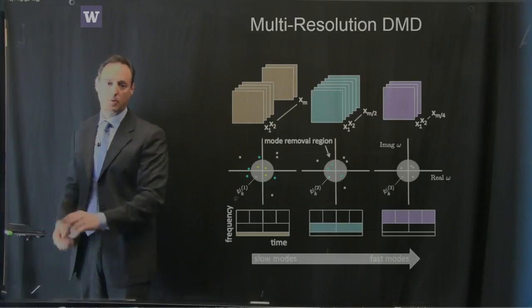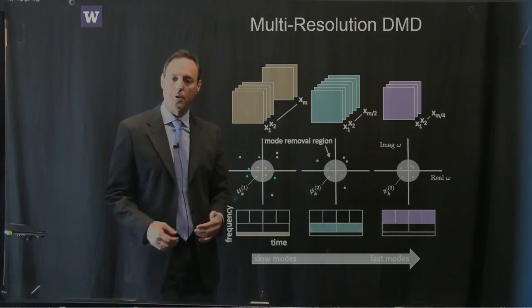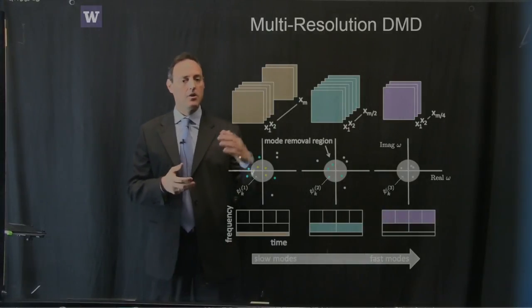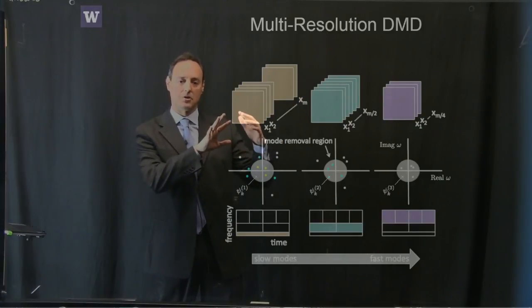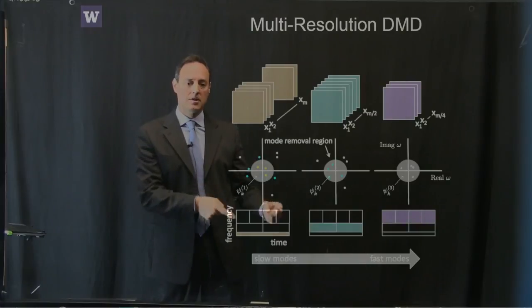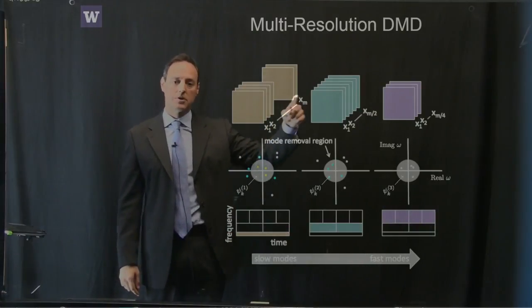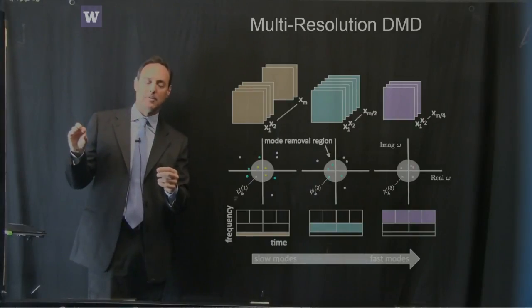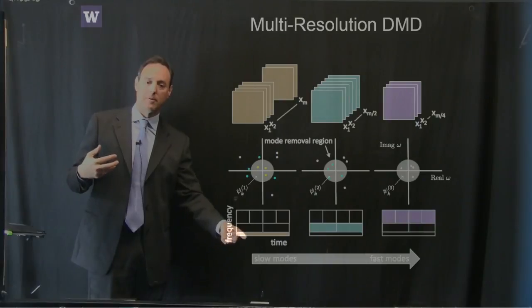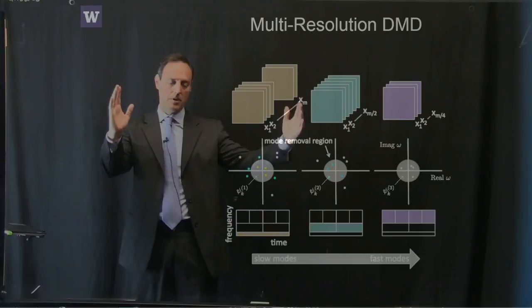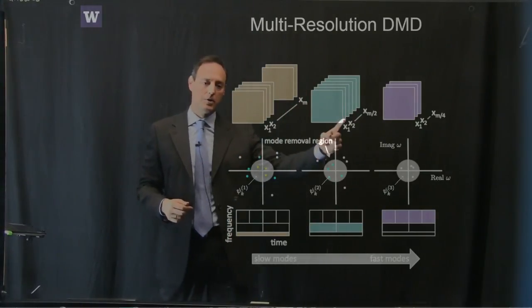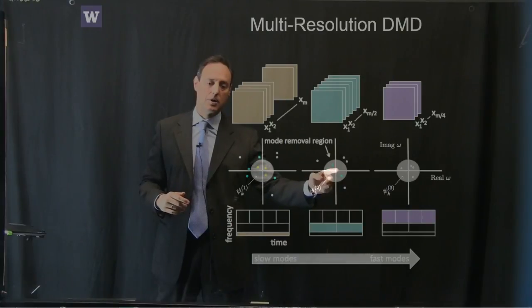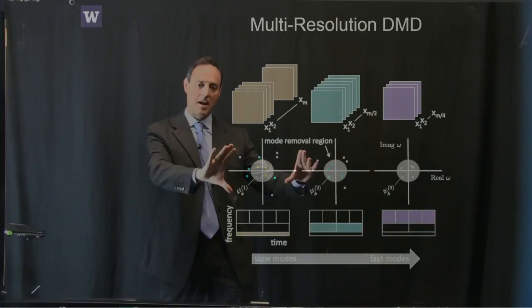Now we take that and apply it here: with snapshots of a dynamical system — fluid flow, neuron recordings, or video frames — we take those snapshots and normally just do the decomposition. Instead, we look at those snapshots, take out only the slowest frequencies — modes sitting near enough to zero — at that level of the decomposition. We then cut the sampling window in half and look for two regions, finding slow modes of each half-window. The eigenvalues on the outside, every time we cut in half, move toward the origin.